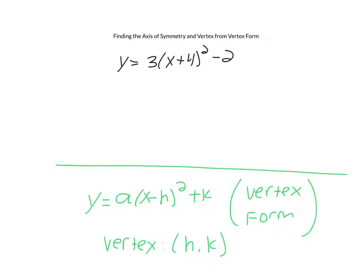If you look down here at the green, we're reminded of the formula and how to find the vertex. The vertex is simply this is the x value and this is the y value. That's why we call this vertex form, because it's very easy to find the vertex.